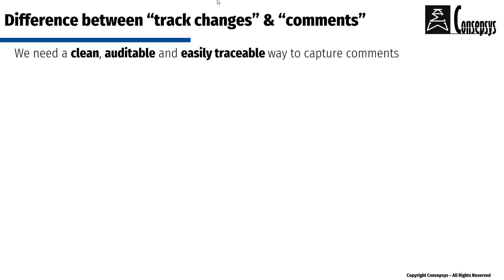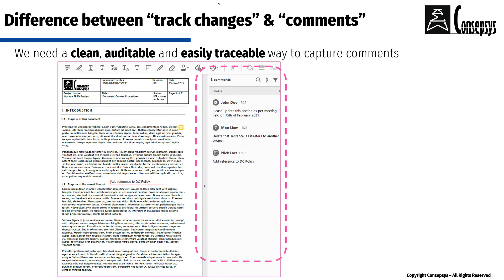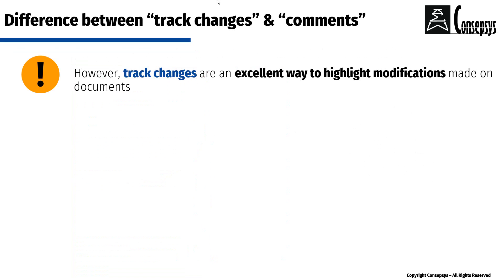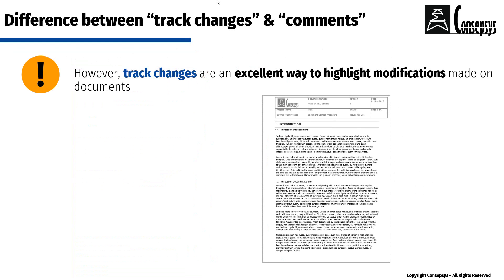It's important to use a clean, auditable, and easily traceable way to capture comments — such as the Adobe Acrobat commenting tools shown earlier, where we can trace even years later who reviewed and commented, when they did it, and what was said. This is especially critical in case of a major incident, an audit, or an investigation. Track changes, however, are an excellent way to highlight modifications made on documents.